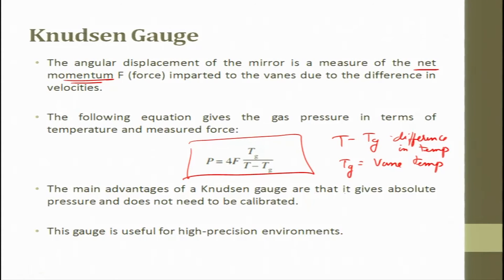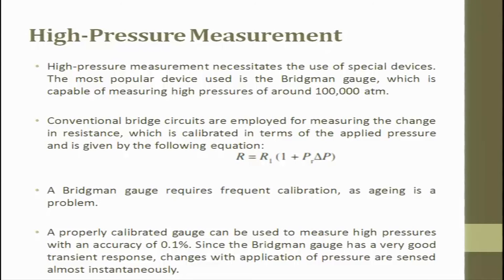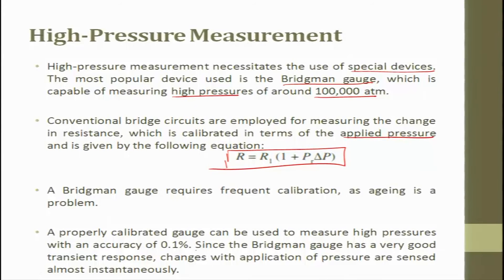The main advantages of the Knudsen gauge are that it gives absolute pressure and does not need any calibration. The Bridgman's gauge is used for high pressure measurements and can measure high pressure up to 1 lakh atmospheres. Conventional bridge circuits are employed for measuring the change in resistance, which is calibrated in terms of applied pressure. The Bridgman gauge requires frequent calibration as aging is a problem, whereas the Knudsen gauge requires no calibration at all.